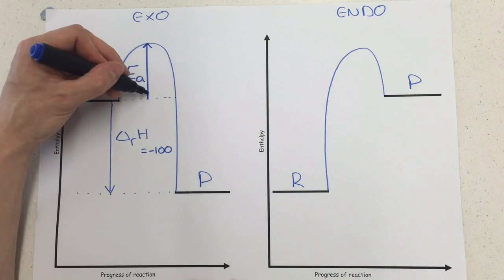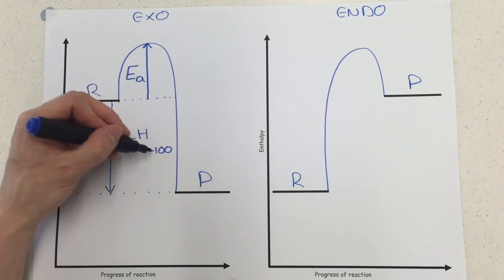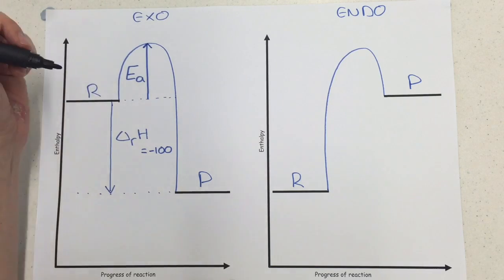The activation energy as you can see then is an upwards pointing arrow because activation energies are always positive, whereas enthalpy changes can be positive or negative. Activation energies are always positive because you've got to put in that extra energy.